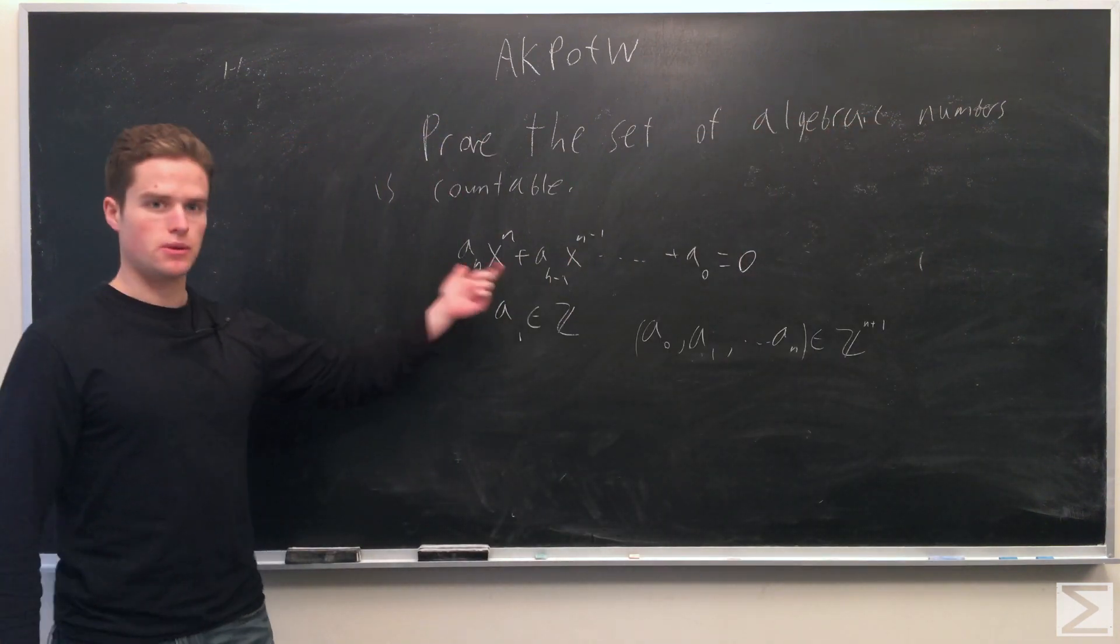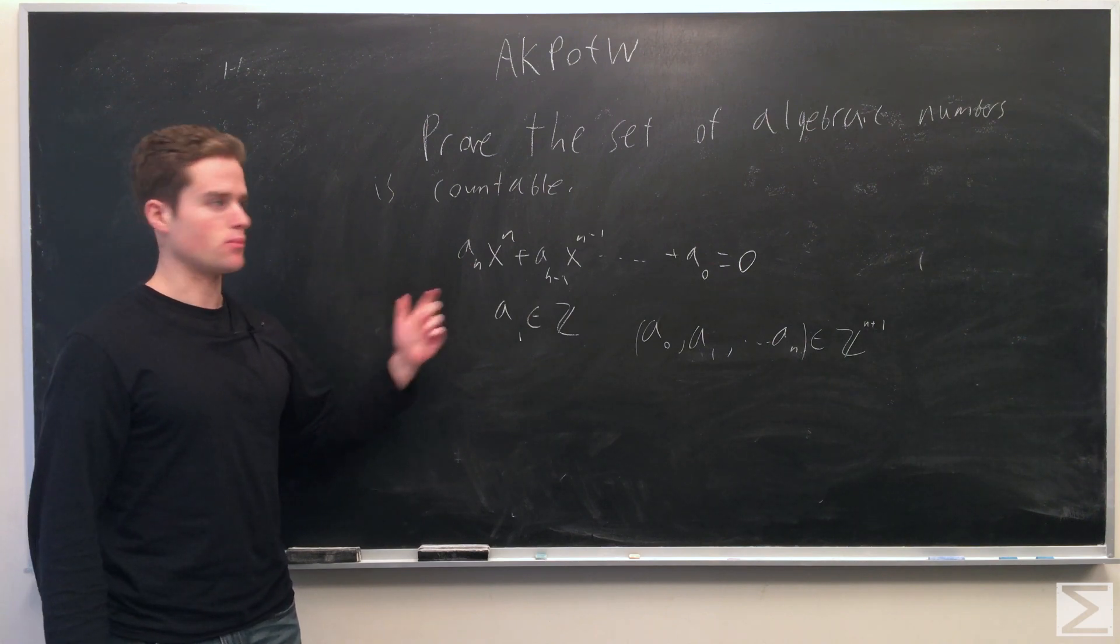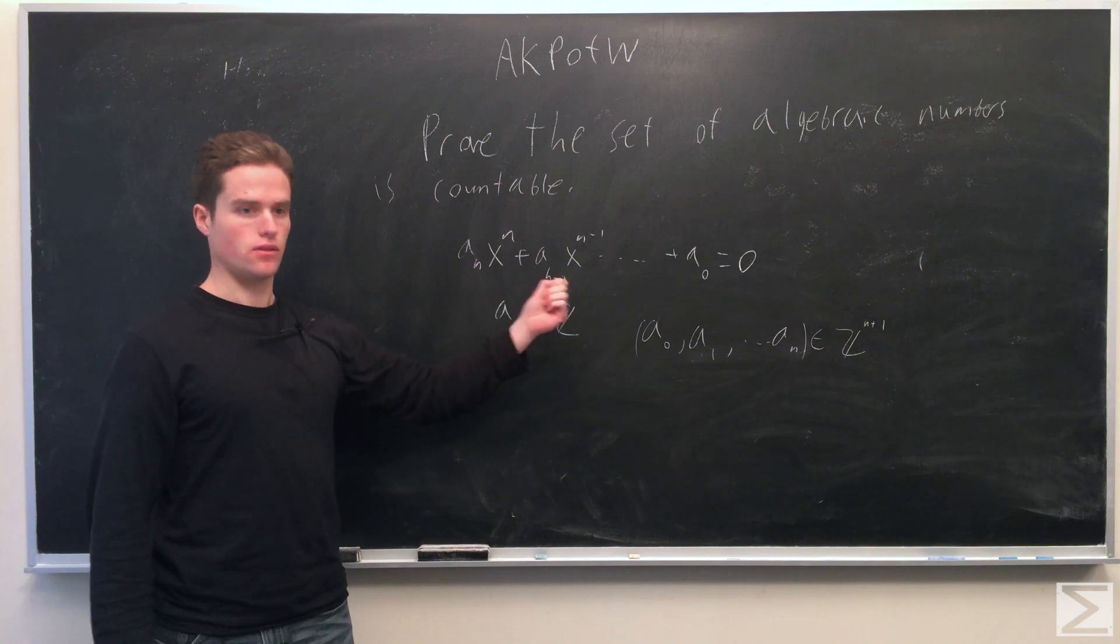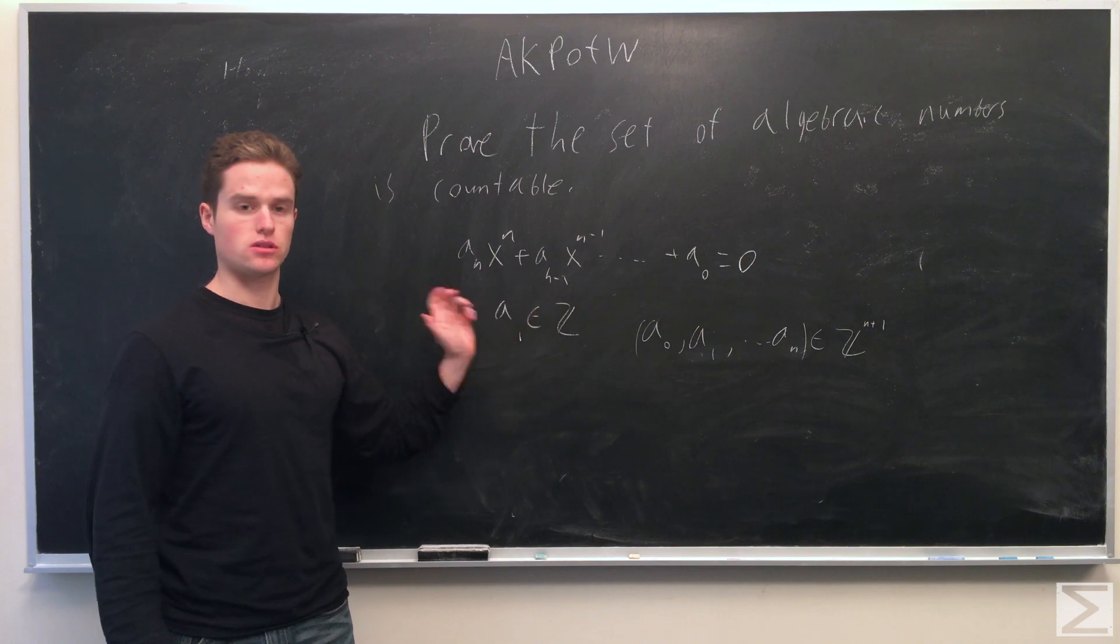To note these polynomials are countable, we're going to note that we have a bijection between them. They're totally determined by what we choose for these coefficients, and they're totally determined by this n+1 tuple that we choose in Z^(n+1), which is just the product of n+1 sets of integers.